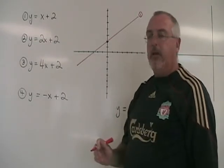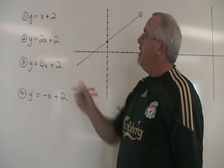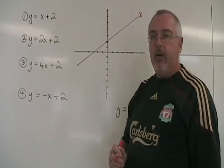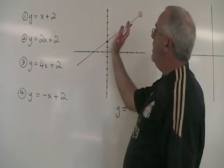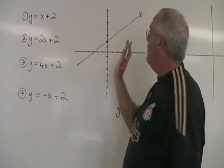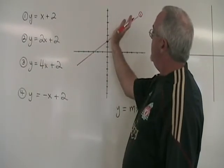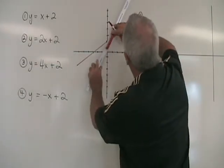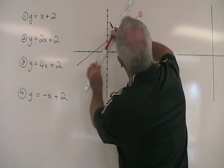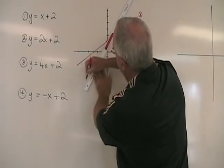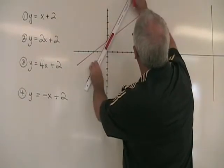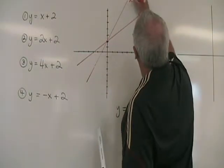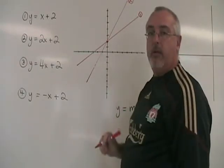If we double the slope, in equation 2, m is equal to 2. This will cause the line to rotate so that it forms an angle halfway between the original line and the y-axis, while still going through the same y-intercept.